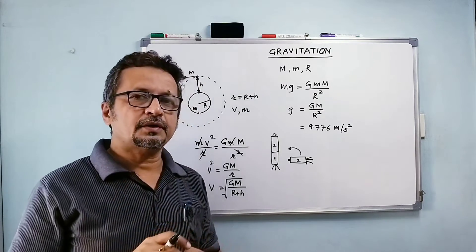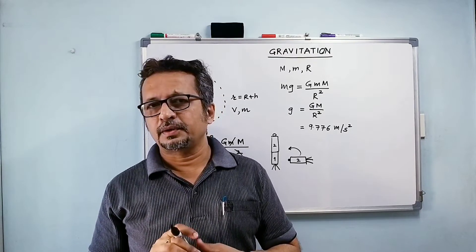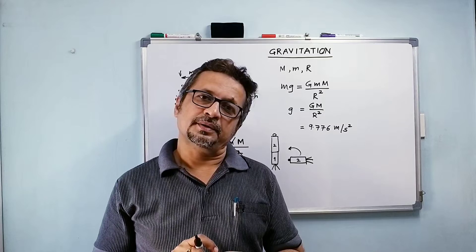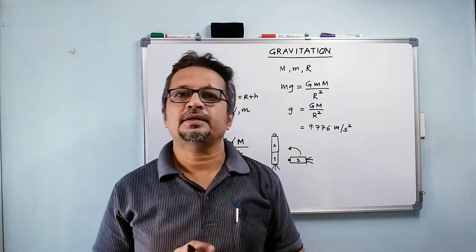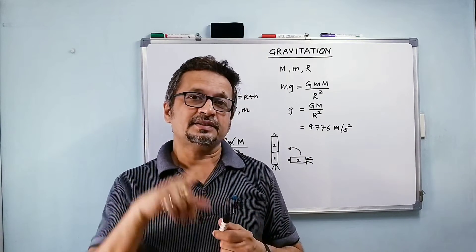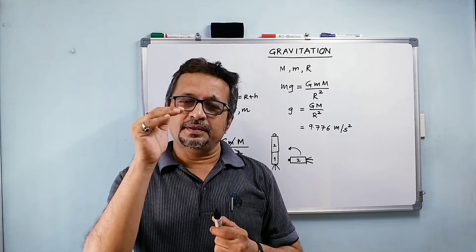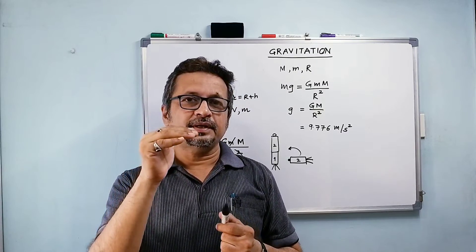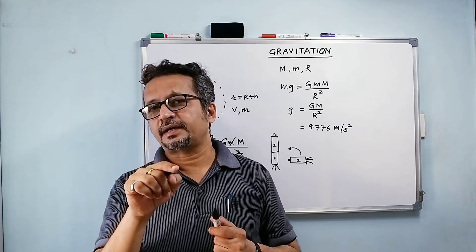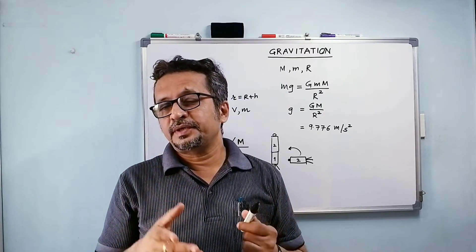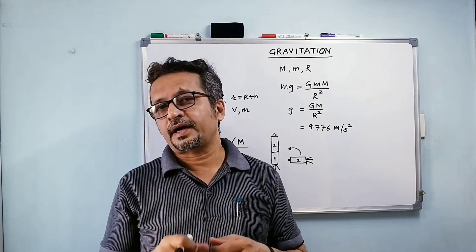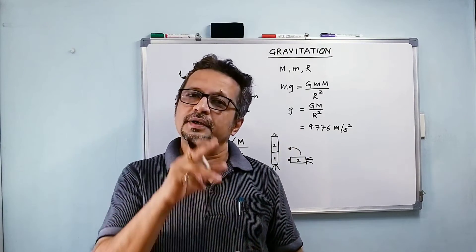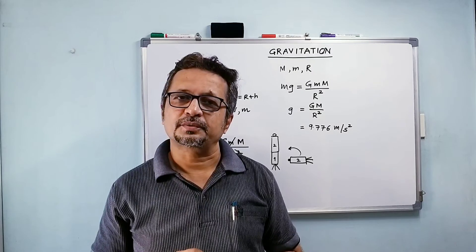In the next video, we are going to talk in detail about escape velocity and the acceleration of free fall at a particular height. The satellite is orbiting at a particular height above Earth's surface, and Earth's gravitational force acts on it. We will find out the value of acceleration of free fall at that point. Thank you so much.